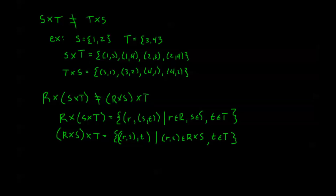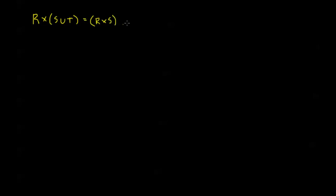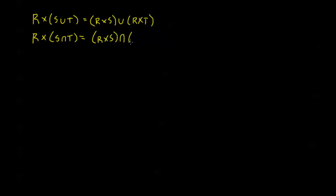We do, however, have a distributive law — not over cross products, but over unions and intersections. So let R, S, and T be sets. We have that R cross (S union T) equals (R cross S) union (R cross T). I can't distribute the cross product over cross products, but if the inner operation is a union or an intersection, I can distribute. We also have R cross (S intersection T) equals (R cross S) intersection (R cross T).